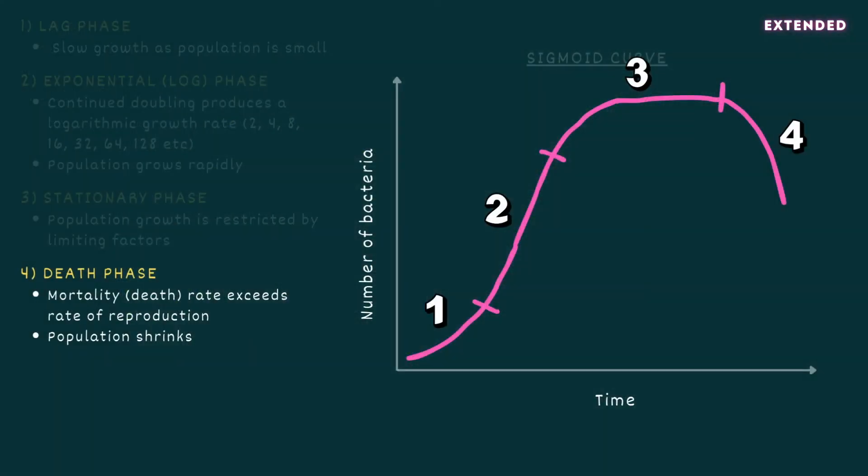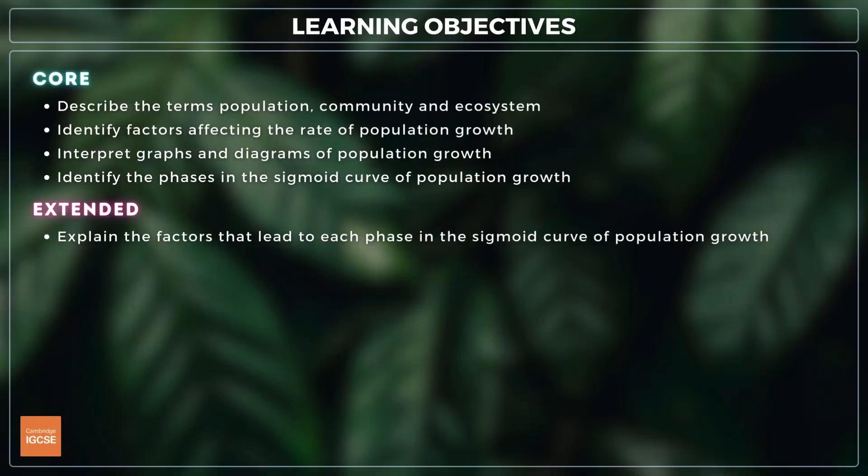Eventually, the population enters the death phase, where mortality rate exceeds rate of reproduction and population numbers begin to fall. Well done — you've just covered absolutely everything you need to know on topic 19.4, populations.